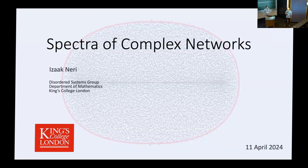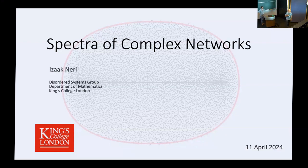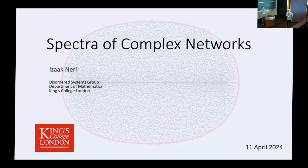It's a pleasure to introduce Dr. Isaac Neri. Isaac got his PhD from KU Leuven in 2010, in disordered systems. He's a theoretical physicist, mathematical physicist, working on the interface between non-equilibrium thermodynamics and stochastic processes, but he worked on a broad range of subjects including disordered systems and random matrix theory. After his PhD, he had several postdoctoral positions in Europe, including the prestigious ELBE Postdoctoral Fellowship at the Max Planck Institute for Complex Systems in Dresden. Now he's a senior lecturer at King's College London. Isaac, it's a great pleasure to have you here at OIST.